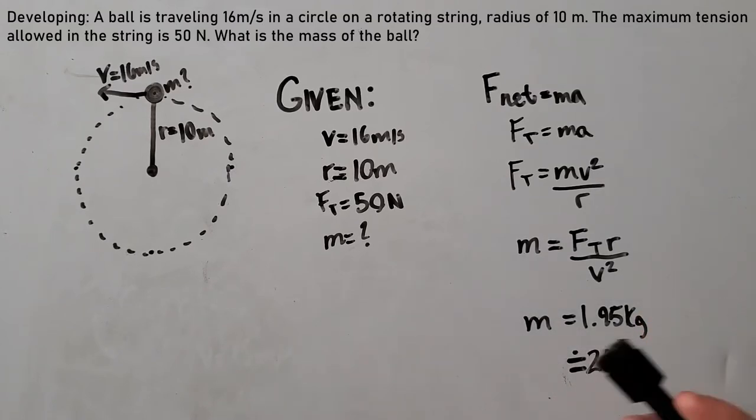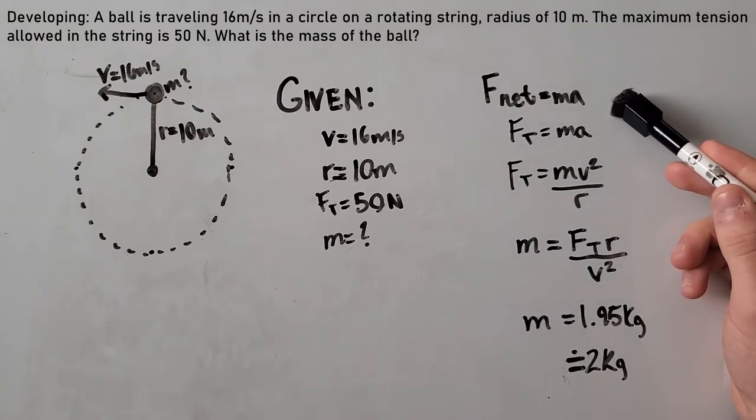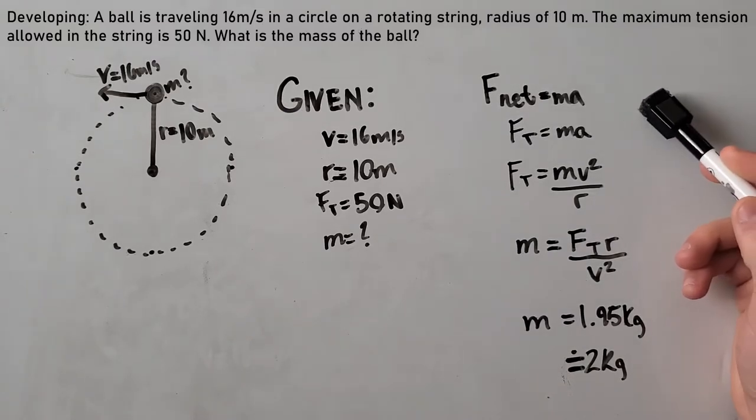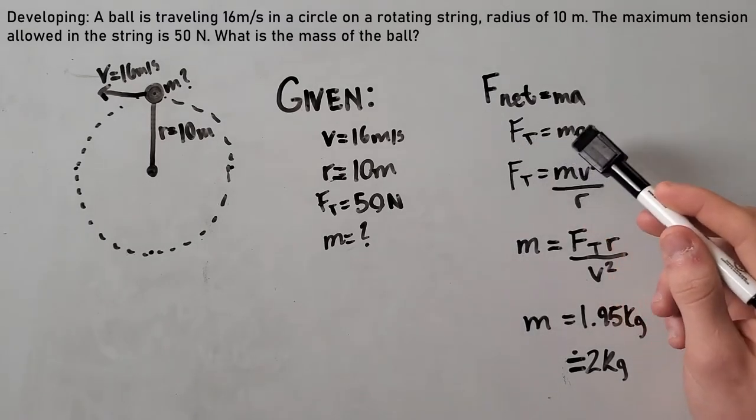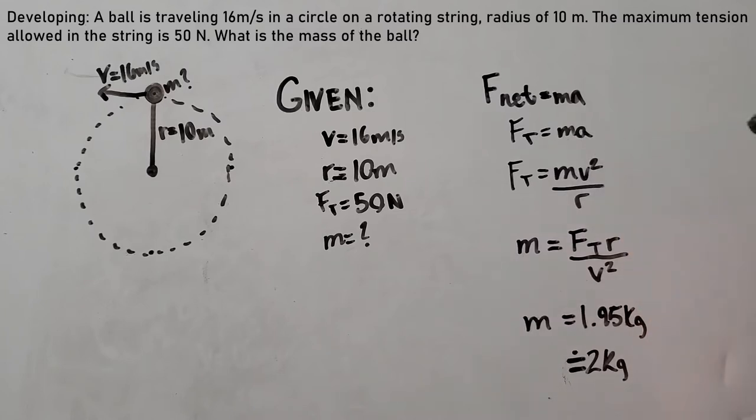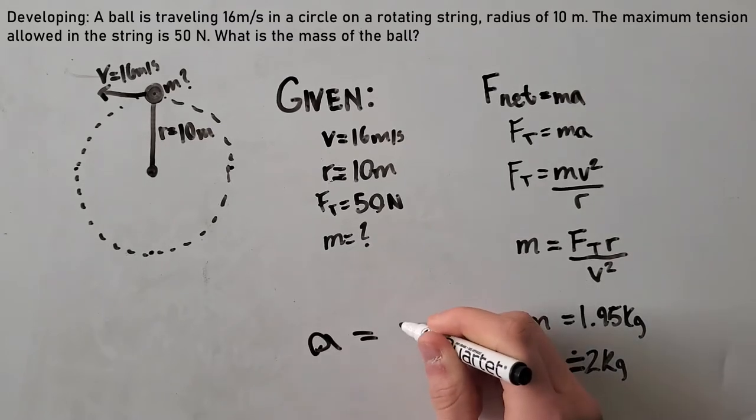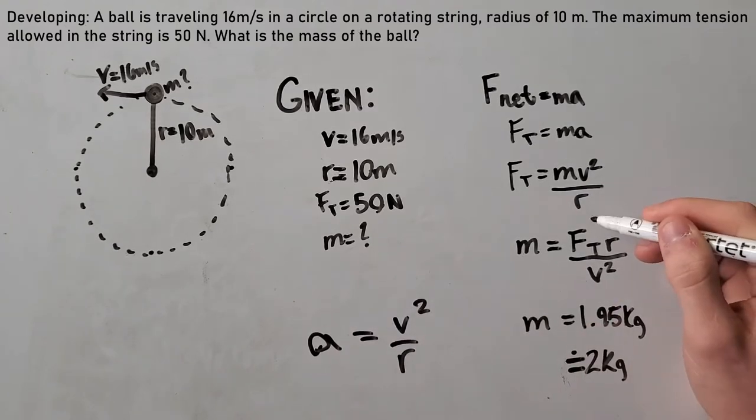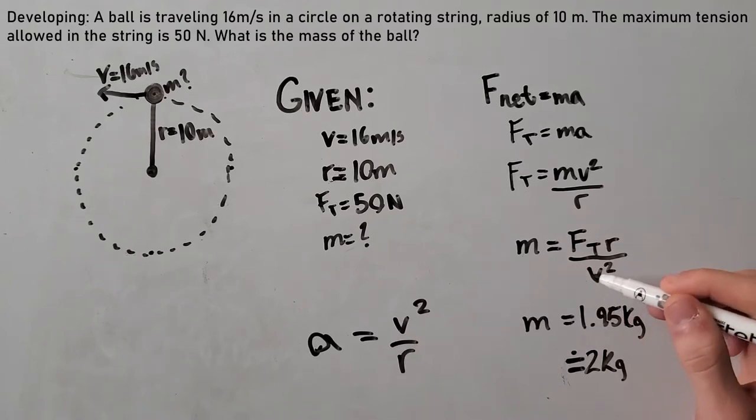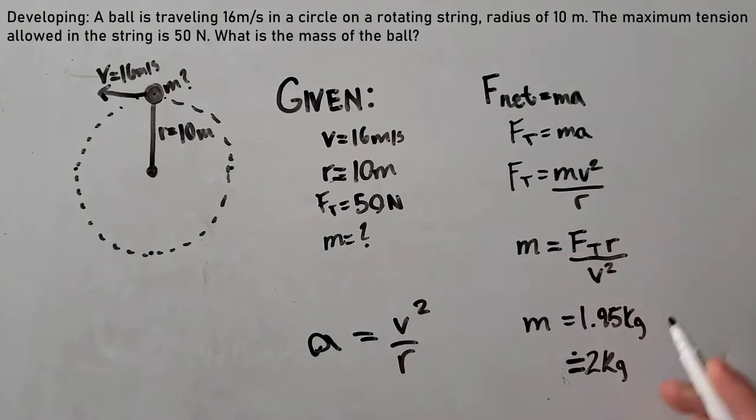Using our forces formulas, we use F net equals Ma, and then we find what our F net is. Our F net is our force of tension, so Ft equals Ma. In circular motion, acceleration equals velocity squared over R. So we can plug in A for V squared over R. Then we rearrange to M equals Ft over V squared, and plug all of our givens into our calculator, and we get a mass of 1.95 kilograms, or rounded to 2 kilograms.